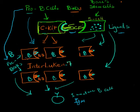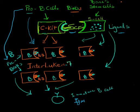Pre B cells — I made them look like a little B with a little cap on top. The six you see here are all pre B cells, and there are millions of them though I obviously cannot draw all of them. They have receptors on top of them, and these receptors are waiting for ligands.